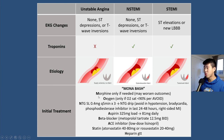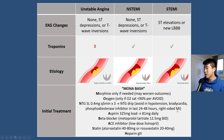Nowadays, morphine is only used if needed, as some studies show it worsens cardiovascular outcomes. Oxygen should only be given if the patient is truly hypoxic with O2 sat less than 90% per the AVOID trial. Nitroglycerin can be given sublingually every five minutes up to three times; if pain persists, start a nitroglycerin drip. Avoid nitroglycerin in hypotension, bradycardia, phosphodiesterase inhibitor use in the last 24-48 hours, or right-sided MI. The limitation of MONA-BASH is that it doesn't address dual antiplatelet therapy, which is now the standard of care.